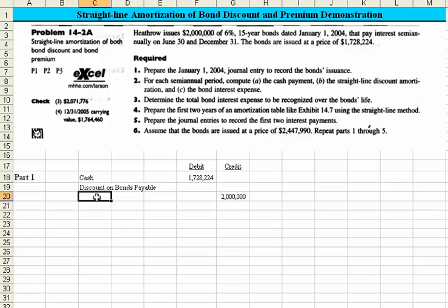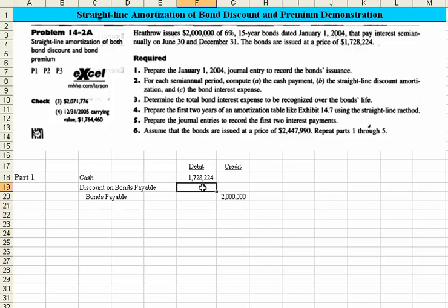Our credit then is to Bonds Payable. Everyone see that our debits equal the credits? The discount would have to equal that amount less that amount — $271,776.